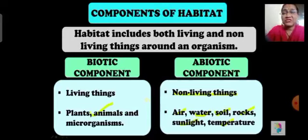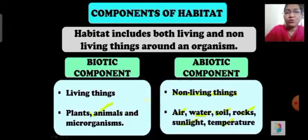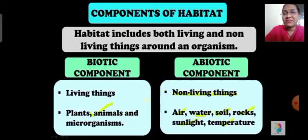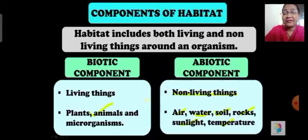Living things such as plants, animals, and microorganisms are the biotic components of habitat. So we can say that habitat includes both living and non-living things around an organism. Non-living things such as air, water, soil, rocks, sunlight, and temperature are the abiotic components of the habitat.